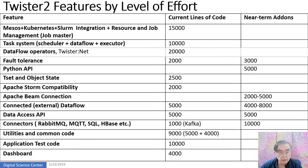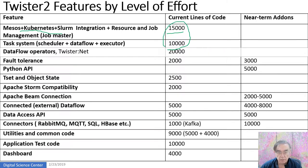This slide tells you about the size of the different parts of Twister 2. The overall integration with Kubernetes, Mesos, and Slurm is 15,000 lines of code. The task system — with scheduler and executor — has 10,000 lines of code, giving a healthy 25,000 total there. We have 20,000 in the data flow operations, including the communication routines in Twister.net. Fault tolerance is not so much — 2,000 now, and we need to add 3,000 more to get solid fault tolerance.